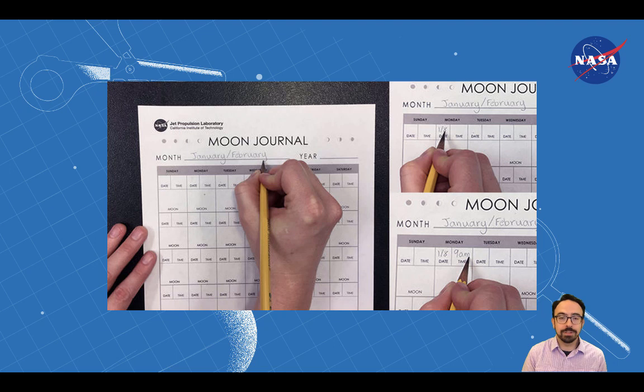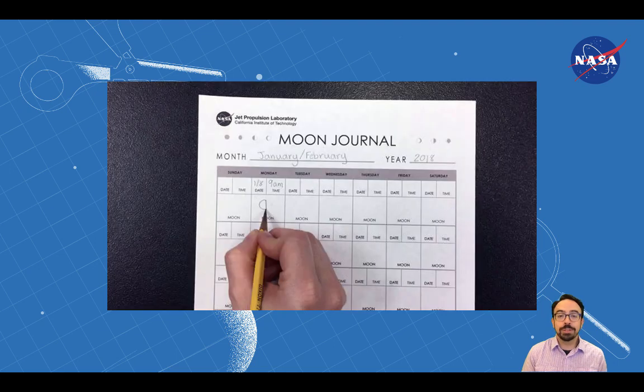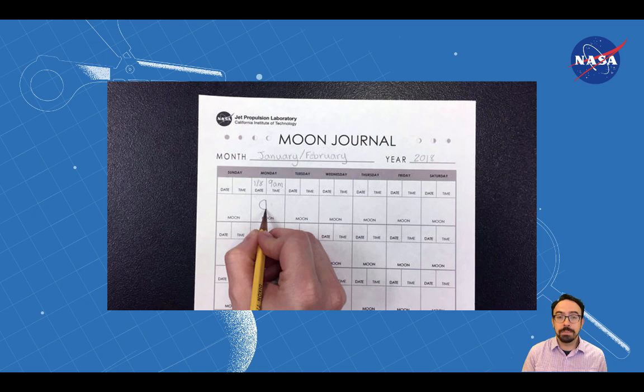Record the date and time of your first observation. When you observe the moon, draw it as you see it in the sky. Don't worry if it's not a masterpiece ready to hang up in a museum. Just try to do your best to get the shape of the lit up part of the moon.